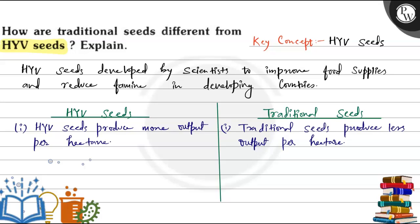Point No.1: HYV seeds produce more output per hectare. In contrast, traditional seeds produce less output per hectare.